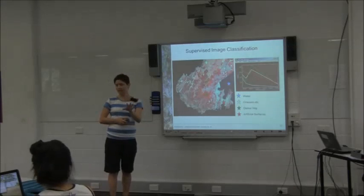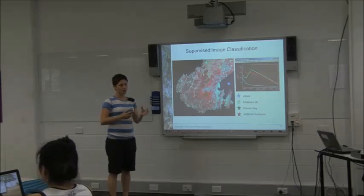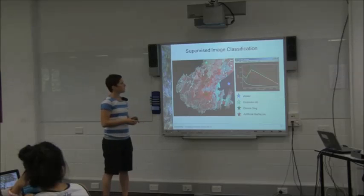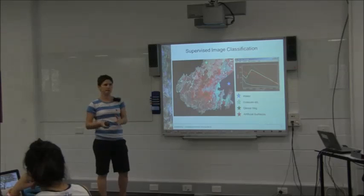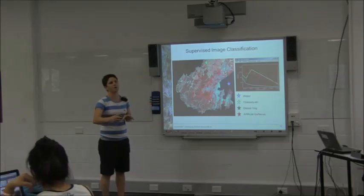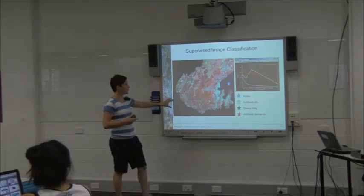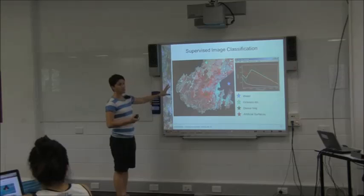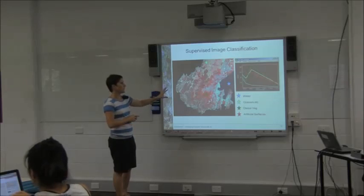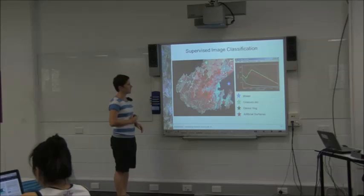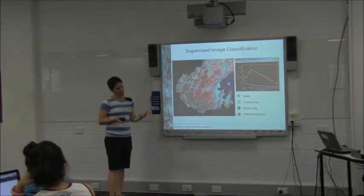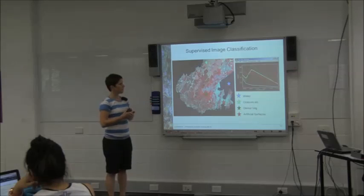Stepping through an example: in the practical you did unsupervised classification, where you specify the number of classes and the software clusters similar-looking pixels together, then you name those classes. In supervised classification, you understand something about the image beforehand. This example is Wellington, New Zealand, using a SPOT image with green, red, near-infrared, and shortwave infrared bands. I've identified four classes to create: water, grasses, dense vegetation, and artificial surfaces, then collected spectral signatures for those areas.